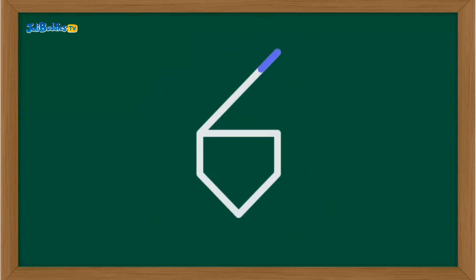You're rocking it! Let's write number six. Start at the top. Curve down and around to make a loop. Perfect! That's number six.